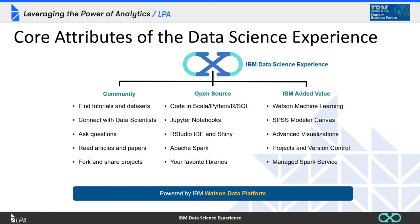DSX also supports visualizations and version control. You can save projects as a particular version, which gets marked and saved so you can always go back to an old version. You can also use GitHub for individual notebooks or components for storing data and version control. The last IBM value-add is managed Spark service — you don't have to install a Spark service or build a Spark cluster locally. You simply take advantage of the Spark service that's part of DSX, provided through IBM Bluemix.